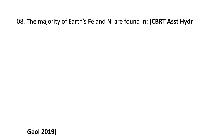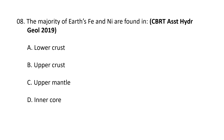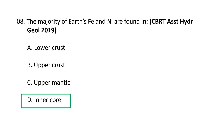Next question: the majority of the Earth's iron and nickel are found in — A) Lower crust, B) Upper crust, C) Upper mantle, and D) Inner core. The majority of Earth's iron and nickel are found in the inner core. That is why the core is also known as NiFe, referring to nickel and iron. The innermost layer of the Earth is the core with a radius of about 3,500 kilometers, made up of iron and nickel. D is the correct option.